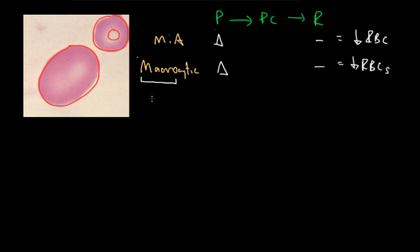And these cells have a really big volume, and the definition of macrocytosis is cells that have more than 100 femtoliters of volume.